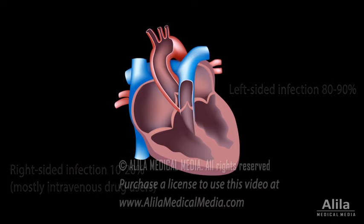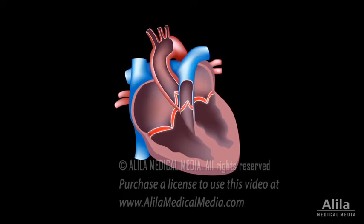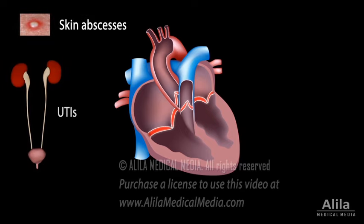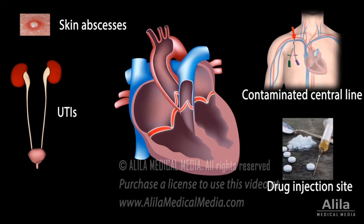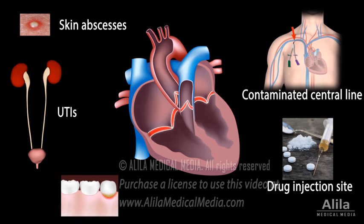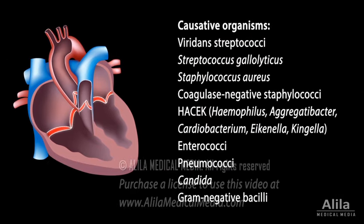Infection of the endocardium occurs most often on the left side of the heart. Organisms that cause endocarditis may come from distant infected sites, such as skin abscesses or urinary tract infections, or they may enter the body through a contaminated central line or injection. Bacteria of the normal flora of the mouth can also infect the endocardium if they get into the bloodstream, such as during invasive dental procedures. Causative organisms may vary depending on the source of infection, but streptococci and staphylococci are responsible for the majority of cases.